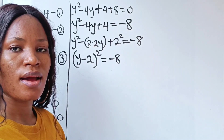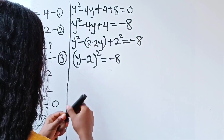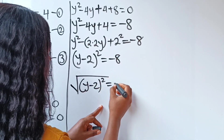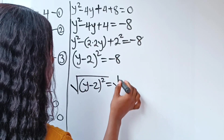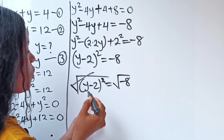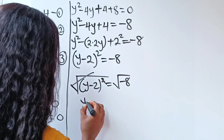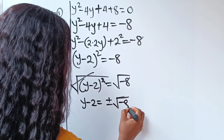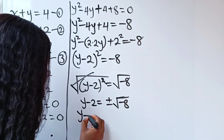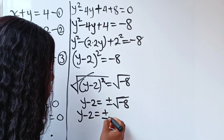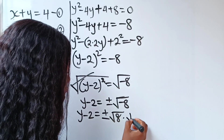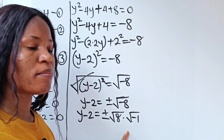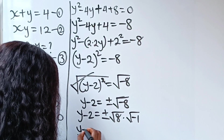Now to remove this square, let's take the square root of both sides. So we have square root of (y minus 2) squared is equal to square root of minus 8. This removes the square, giving y minus 2 equals plus or minus square root of minus 8. Since minus 8 is the same as root 8 multiplied by root minus 1, we have y minus 2 equals plus or minus root 8 times root minus 1.